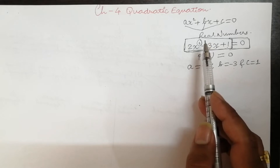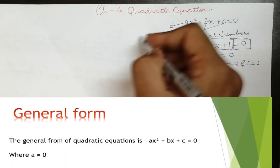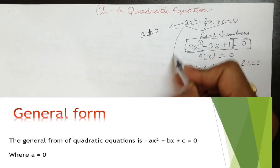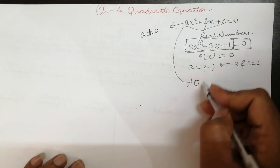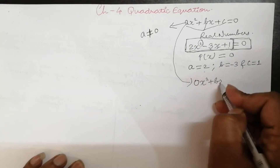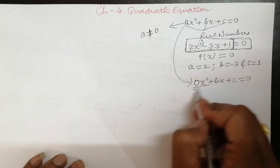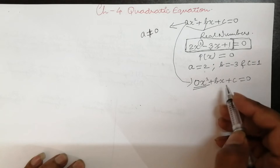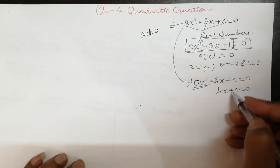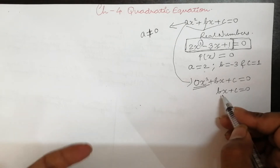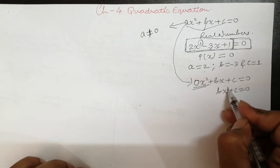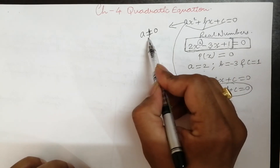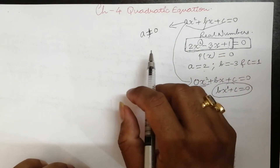So the general form is ax² + bx + c = 0. This is the general form of a quadratic equation. But there is a condition here: for this general form, a should not be equal to 0. See, if in this equation we put 0 in place of a, then 0·x² + bx + c = 0. This complete term becomes 0 because multiplying anything by 0 gives 0. So finally you get bx + c = 0. Now this is not a quadratic equation because the degree is not 2 — the degree of x is 1. So a should not be equal to 0; if it becomes 0 we cannot call it a quadratic equation.